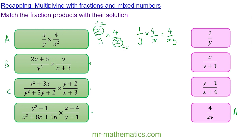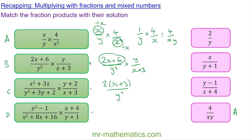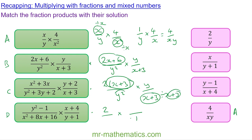Before we cross-simplify we're going to factorize the numerator. We have two lots of x plus 3 over y squared multiplied by y over x plus 3. We can cross-simplify here and here, so we have 2 over 1, and that becomes 1 because we're dividing it by itself. We can simplify by dividing both by y, so y squared divided by y is y and y divided by y is 1, giving us 2 over y.